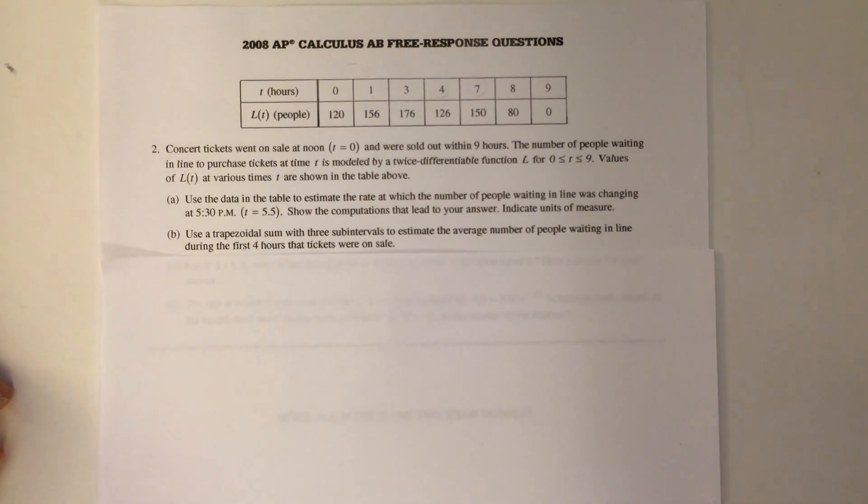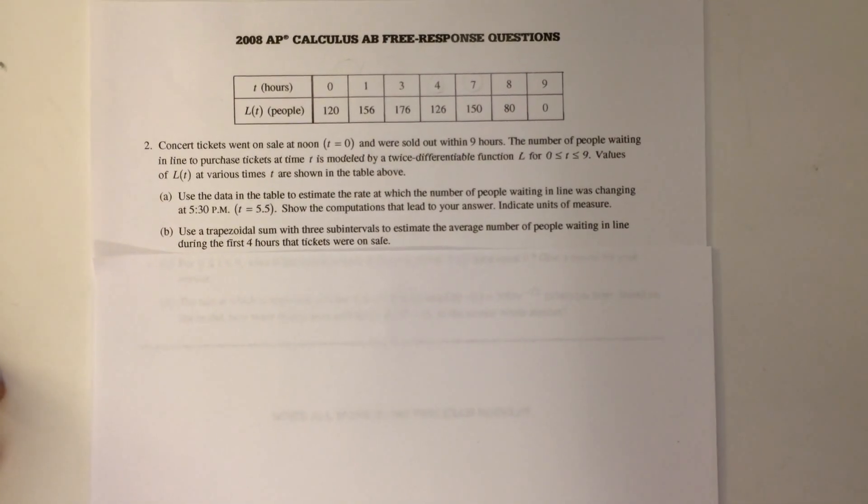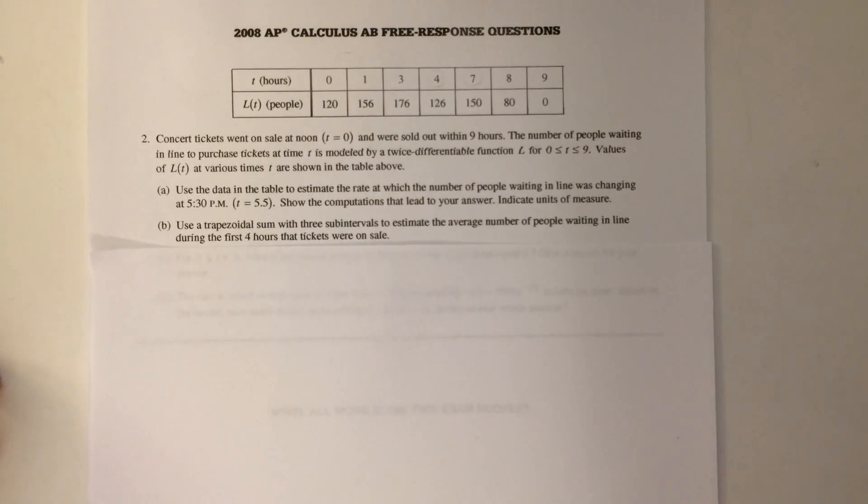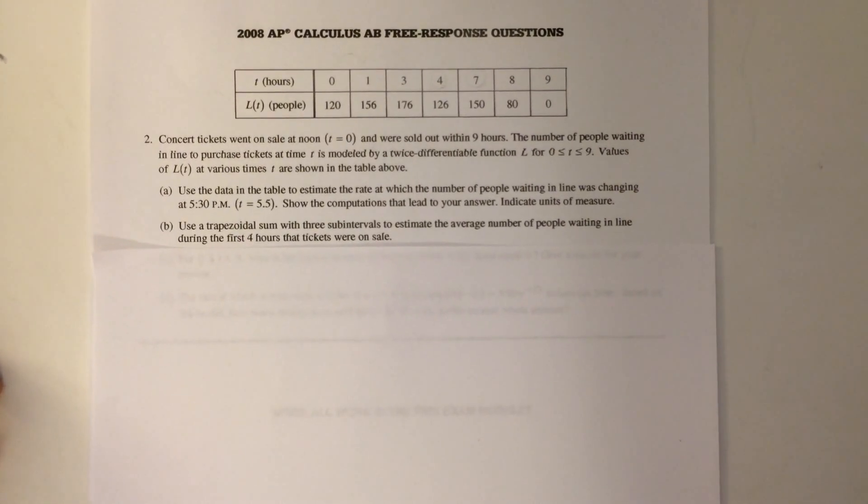Part B says, Use a trapezoidal sum with 3 subintervals to estimate the average number of people waiting in line during the first 4 hours that tickets were on sale.